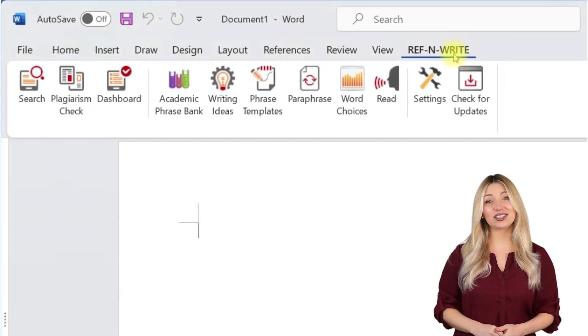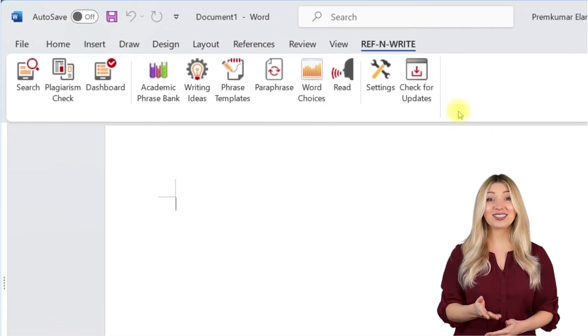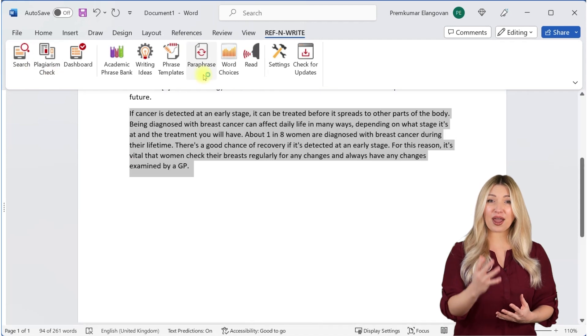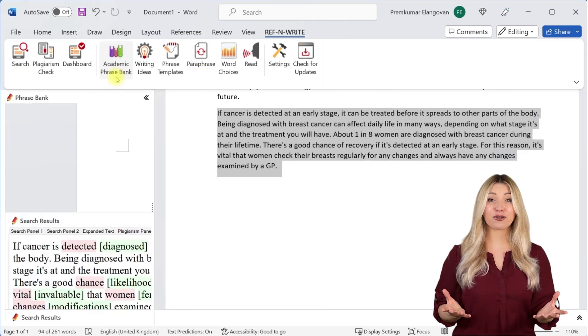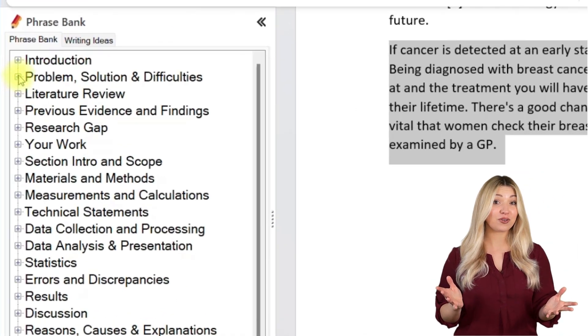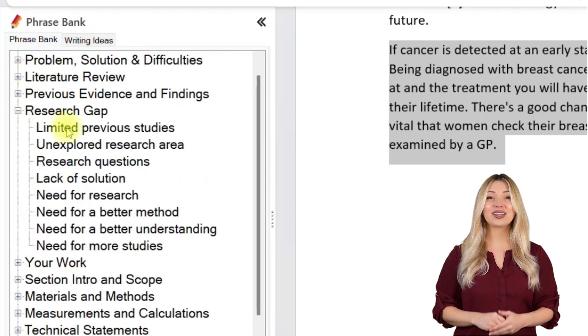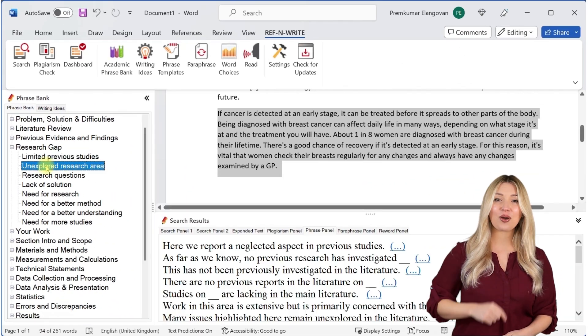If you still haven't installed RefnWrite software, please do it. It comes with referencing tools, plagiarism checkers, proofreading tools, paraphrasing tools, an academic phrase bank, and many other useful features to help you write your research papers and thesis. You can sign up for free using the link below in the description.